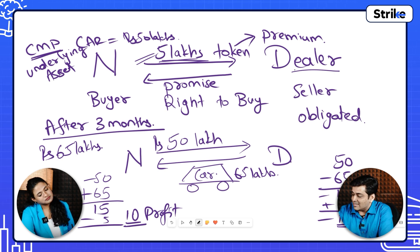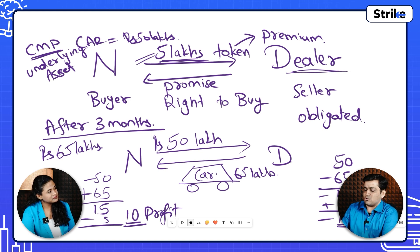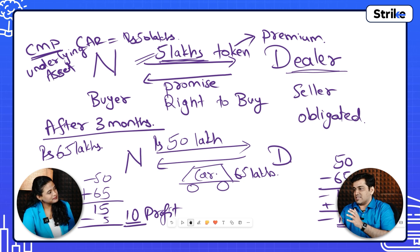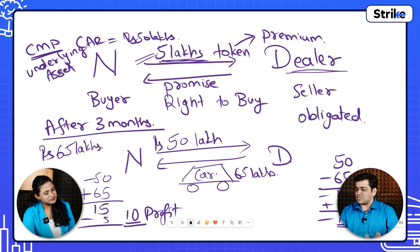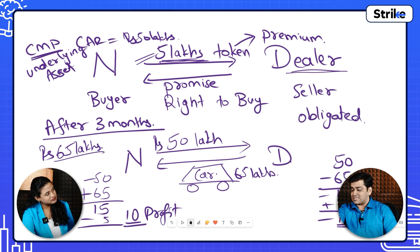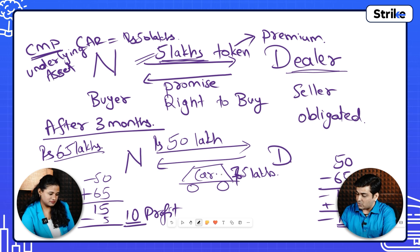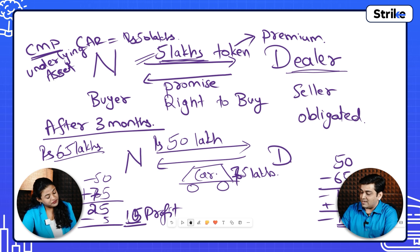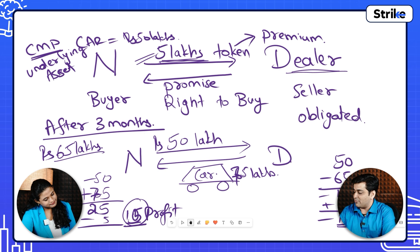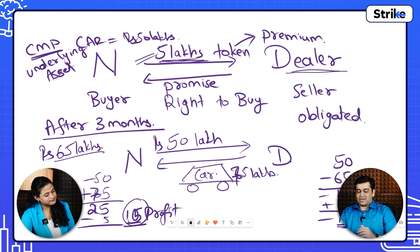If the car price drops to 40 lakh rupees, the dealer makes a 5 lakh rupees profit. Even if it dropped to 30 lakh rupees, you still would not exercise your right. Irrespective of how much the underlying asset price falls, your maximum loss is limited to the premium paid — 5 lakh rupees. On the upside, if the car price rose to 75 lakh rupees, you'd exercise your right, get a car worth 75 lakh rupees for 50 lakh rupees — a 25 lakh rupee gain minus 5 lakh premium equals 20 lakh rupees profit, which is a 20 lakh rupees loss for the dealer.